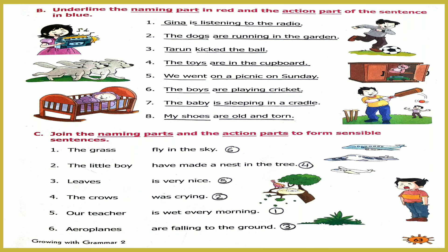Exercise C. Join the naming parts and the action parts to form sensible sentences. Number 1: The grass is wet every morning. Number 2: The little boy was crying. Number 3: Leaves are falling to the ground. Number 4: The crows have made a nest in the tree. Number 5: Our teacher is very nice. Number 6: Aeroplanes fly in the sky.